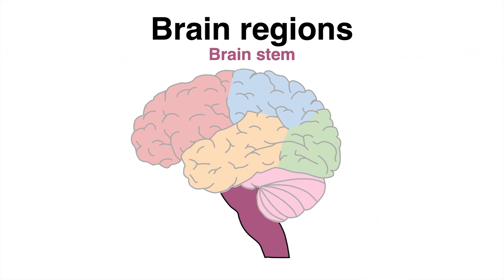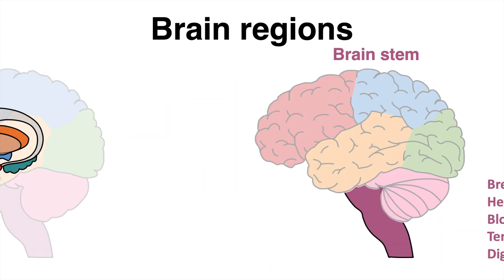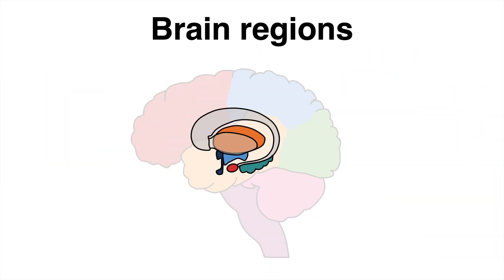The brain stem, which connects the brain with the spinal cord, predominantly regulates vegetative functions. Among them: breathing, heart rate, blood pressure, temperature and digestion.